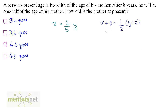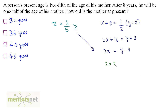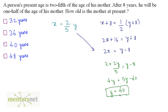From this equation, moving terms: 2x plus 16 equals y plus 8, so 2x equals y minus 8. Substituting x equals 2y/5: 2 times 2y/5 equals y minus 8, so 4y/5 equals y minus 8. Multiplying through: 4y equals 5y minus 40, so y equals 40. Therefore the mother's age at present is 40 years.